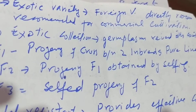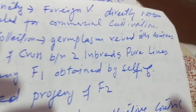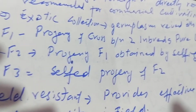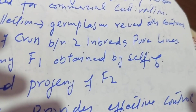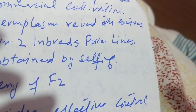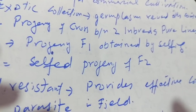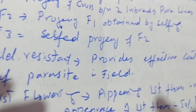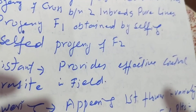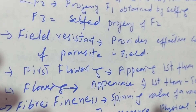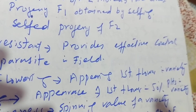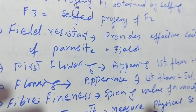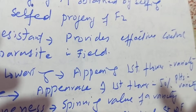Exotic variety is the foreign variety which is directly recommended for commercial cultivation. Exotic collection is the germplasm received from other countries. F1 is the progeny of a cross between two inbreds or pure lines. F2 is the progeny of F1 obtained by selfing. F3 is the selfed progeny of F2.